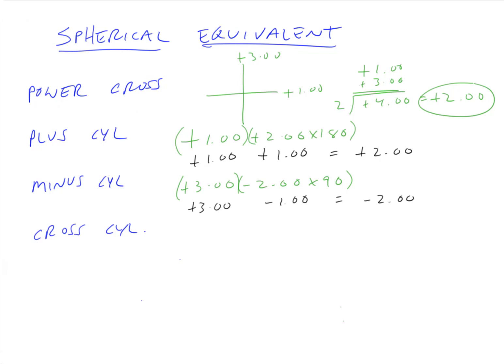For cross cylinder notation, we have plus three axis 180 as one of the lenses and plus one axis 90 as the other lens. Both are cylindrical lenses, so we find the spherical equivalent of each. The spherical equivalent of the first lens is half of three, which is plus 1.50. The spherical equivalent of the second lens is half of one, which is plus 0.50. So the answer is plus two.